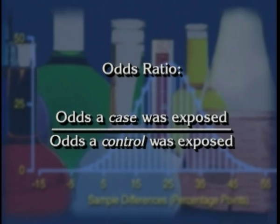Another measure of excess risk is the odds ratio, discussed in detail in the reference manual. For general purposes, you can interpret the odds ratio just the way you would interpret a relative risk. The odds ratio is most commonly used in a case-control study.